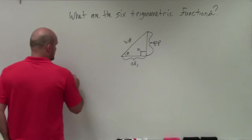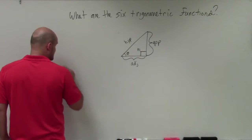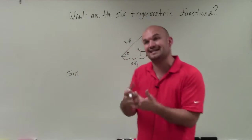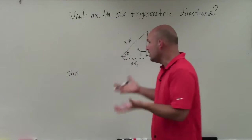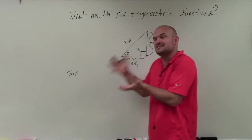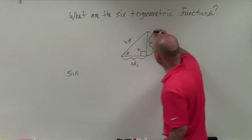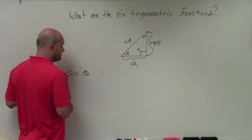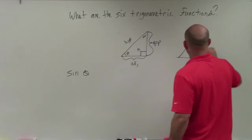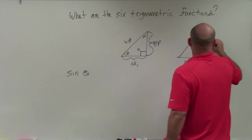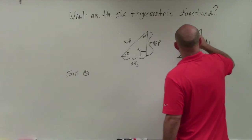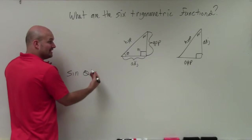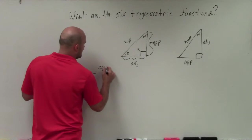The first trigonometric function, or first ratio, is the sine. The sine is a function — it's always the sine of an angle. That angle puts our triangle into context: how do the side lengths relate to that angle? If I'm talking about sine of theta versus sine of alpha, those mean two totally different things. The sine of an angle is the relationship of the opposite side over the hypotenuse.